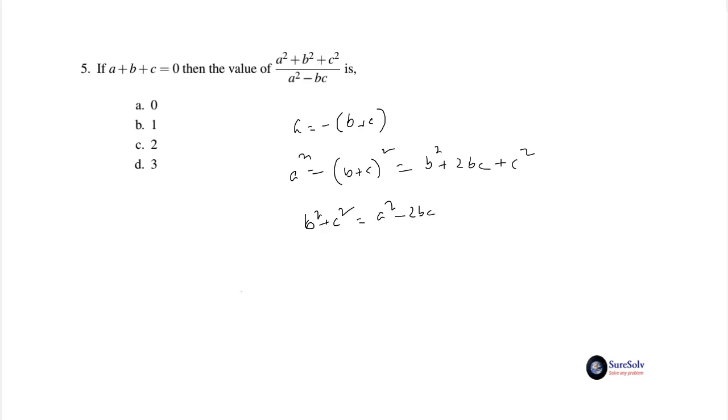So the target expression becomes (a² + a² - 2bc)/(a² - bc) = (2a² - 2bc)/(a² - bc) = 2.